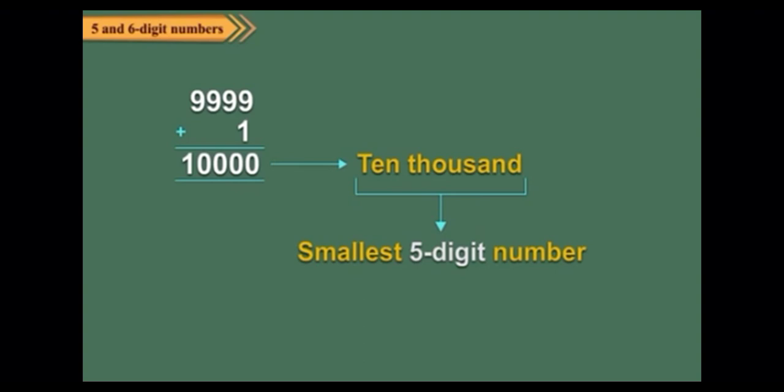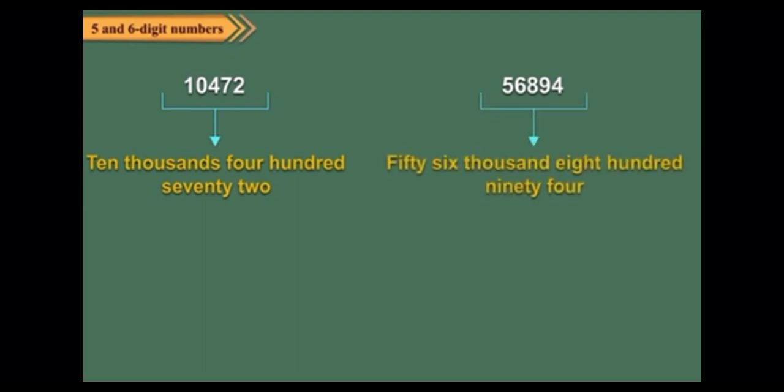Here, the digit 1 is at the ten thousand place. Some other five-digit numbers are 10,472, read as ten thousand four hundred seventy-two; 55,694, read as fifty-six thousand eight hundred ninety-four; and 80,031, read as eighty thousand thirty-one.